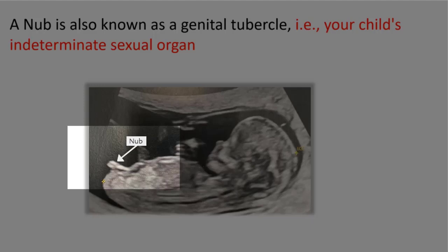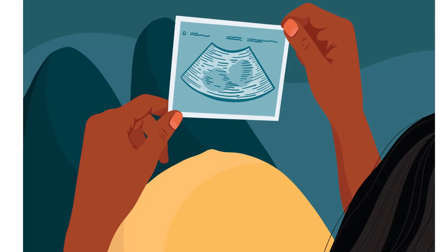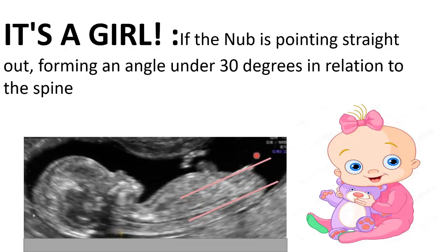This genital tubercle becomes visible after 12 weeks, so in order to know the gender of your baby, you must have a scan after 12 weeks of gestation. In order to know the gender of your baby by Nub theory, first take an ultrasound picture of your baby in which the Nub is clearly visualized. Then draw a line along the longitudinal axis of the Nub and a line along the longitudinal axis of the spine, and see the relationship between them. If they are parallel or horizontal to each other, or if they are making an angle under 30 degrees, it means that you are going to have a baby girl.